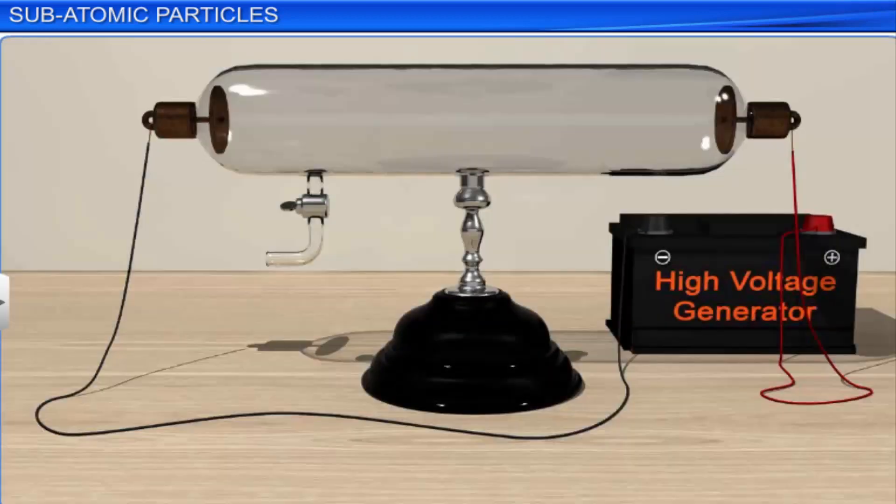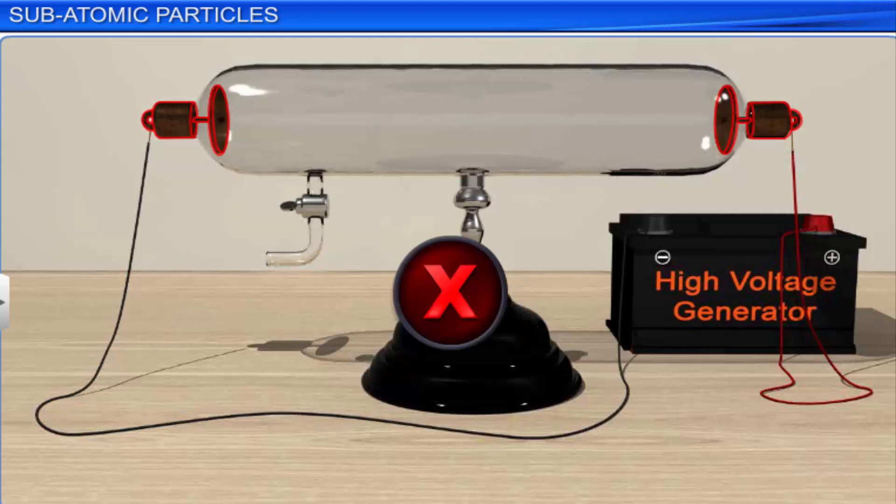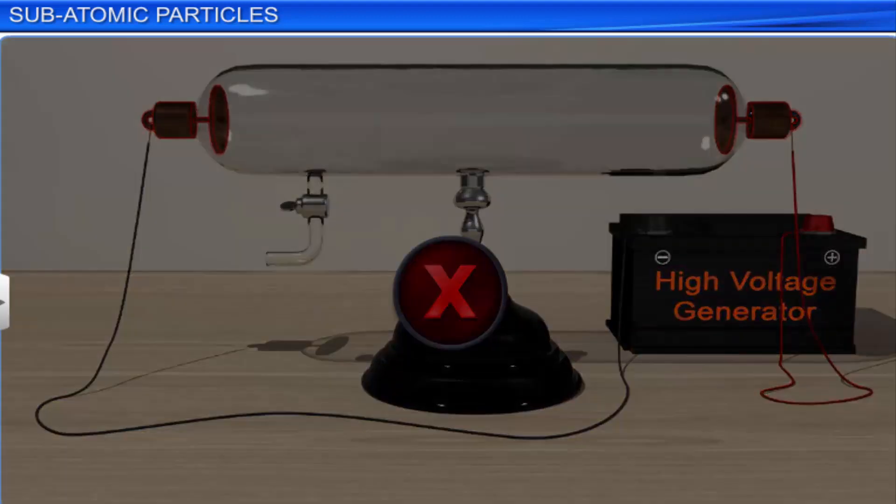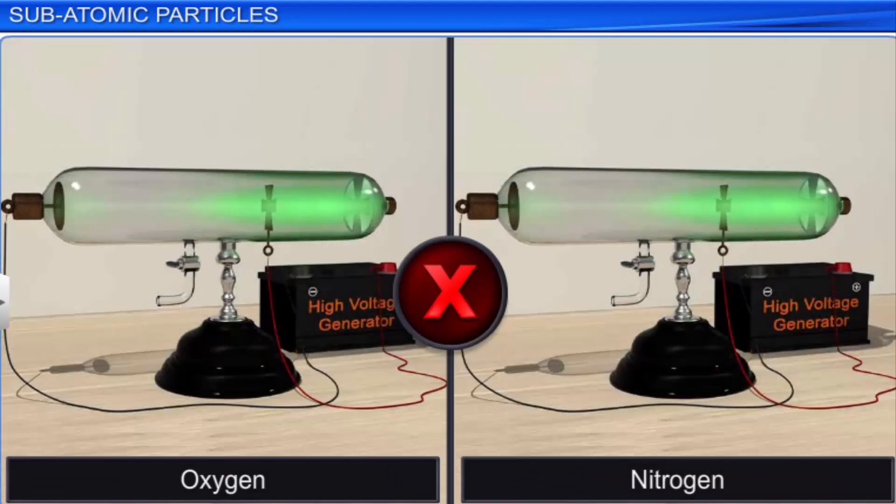Through his experiments, Thomson also concluded that the properties of cathode rays do not depend upon the material of electrodes and the nature of the gas present in the cathode ray tube. This led him to the conclusion that electrons are the basic constituents of all atoms.